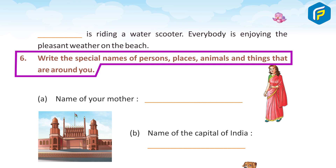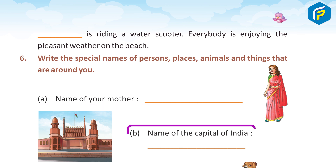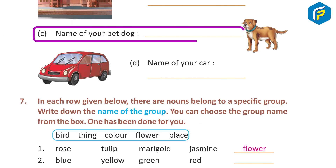Exercise 6: Write the special names of persons, places, animals, and things that are around you. A. Name of your mother — Answer: Do it yourself. B. Name of the capital of India — Answer: New Delhi. C. Name of your dog — Answer: Do it yourself.